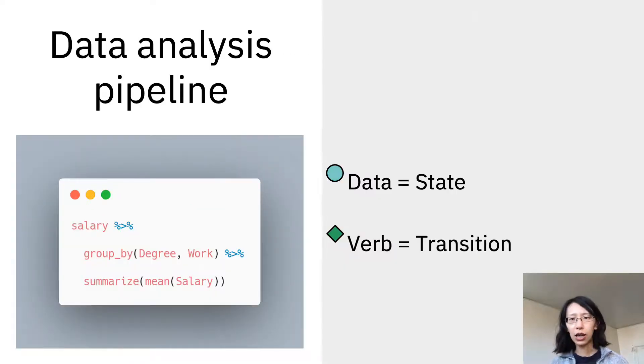So how does Datamations translate from code to animation? First, we want to introduce a set of abstractions. If we look at a piece of tidyverse code written in R, we can identify the initial variable. And this data gets piped into the next data operation verb, like the group right there. And the output will be a data variable again.